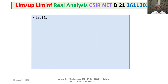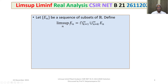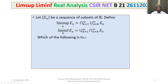The problem: let En be a sequence of subsets of the set of real numbers. Define limit superior En as n tends to infinity equal to intersection k=1 to infinity of union n=k to infinity of En. Limit inferior as n tends to infinity of En equals union k=1 to infinity of intersection n=k to infinity of En. Which of the following is true?